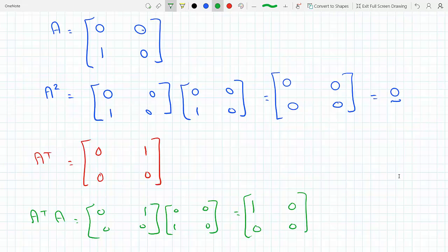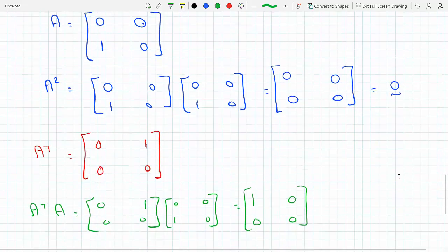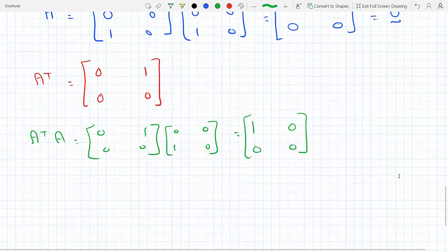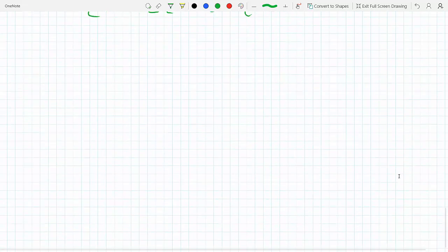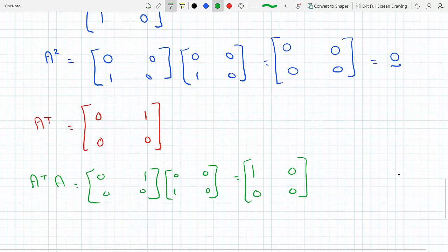So you can see that although A² equals zero, A² equals the zero matrix, A^T A is not a zero matrix.